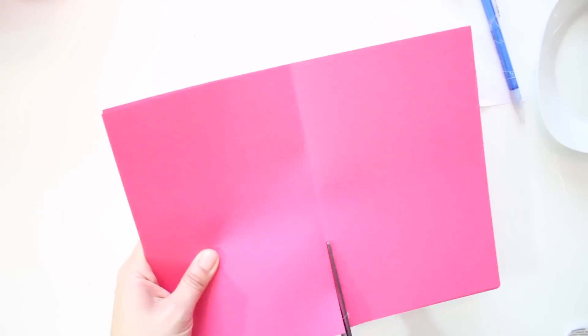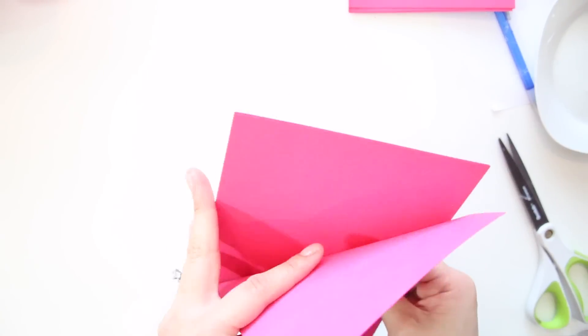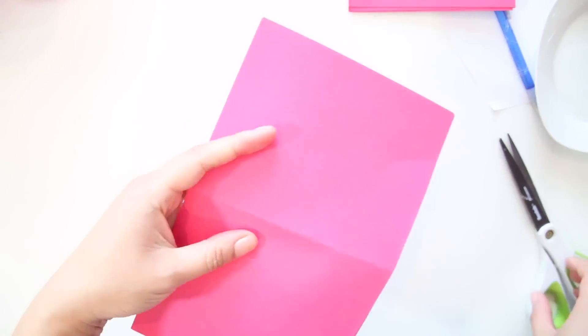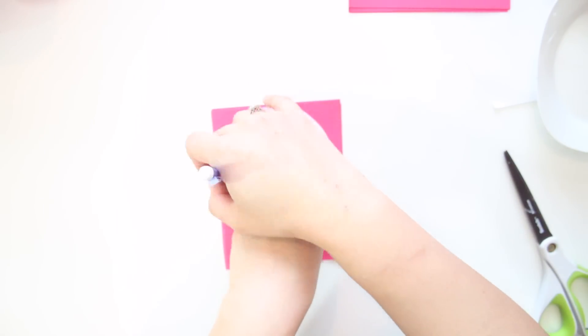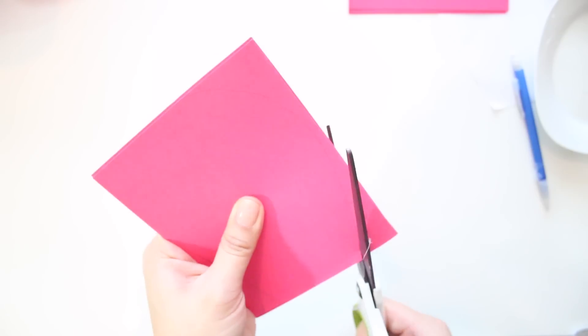For the smallest petal template, take 3 of your half sheets, fold it in half and cut it in half again. Repeat all the steps that you did for the large and medium template.